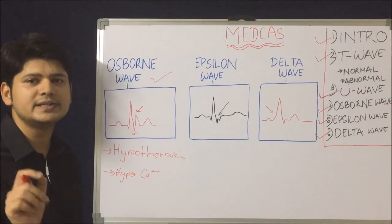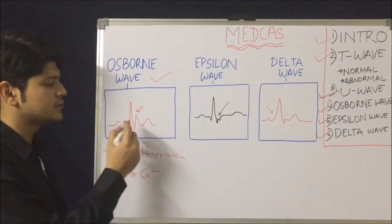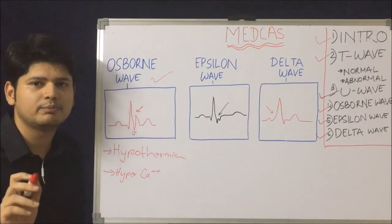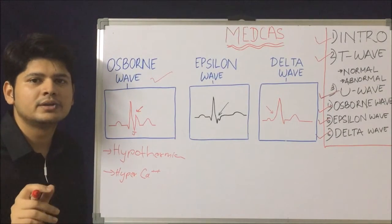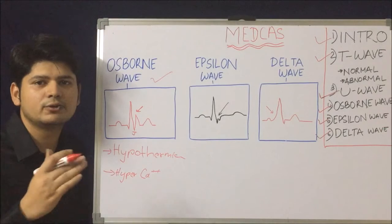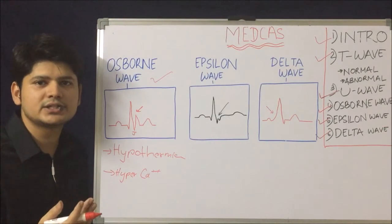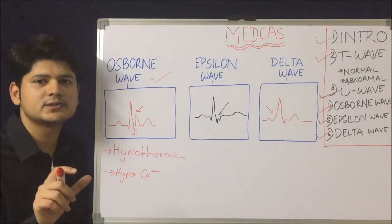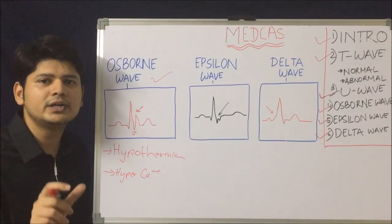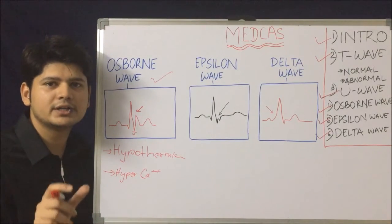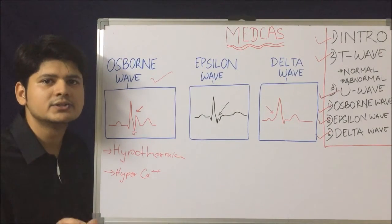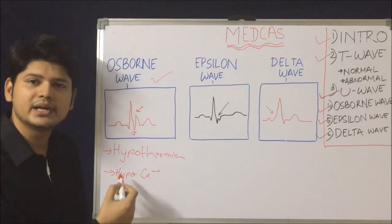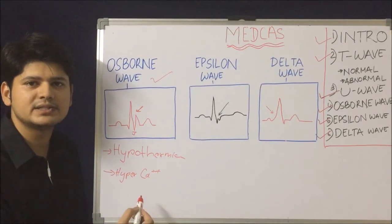How to differentiate on ECG whether the Osborne wave is due to hypercalcemia or hypothermia? Look at the QT interval. The QT interval is prolonged in hypothermia, while the QT interval is short in hypercalcemia. So the causes of the Osborne wave are hypothermia and hypercalcemia.